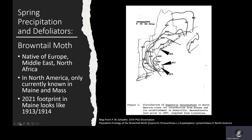Brown tail moth is a native of Europe, the Middle East and North Africa. It was introduced into North America in the late 1800s at about the same time and area as gypsy moth was brought into the country. It spread to encompass parts of New England, New York and the Maritimes of Canada, reaching its greatest extent in the early 1910s. Shortly thereafter, the populations collapsed and they collapsed pretty rapidly.